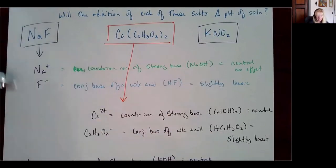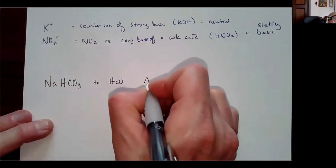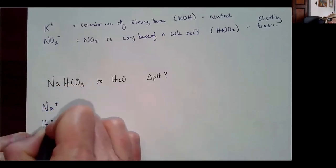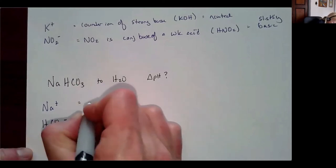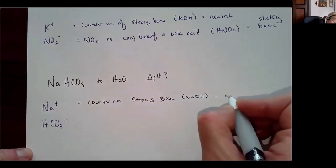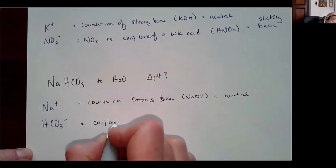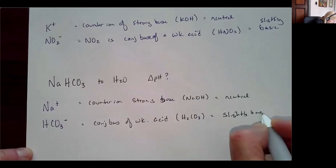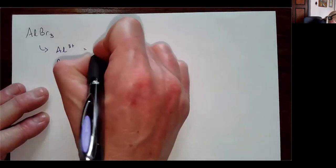For KNO₂: K⁺ is the counter ion of strong base KOH — neutral, no effect. NO₂⁻ is the conjugate base of weak acid HNO₂ — so it will be slightly basic. In all three of these cases — NaF, calcium acetate, and KNO₂ — adding them to water raises the pH above neutral. For sodium hydrogen carbonate: Na⁺ is the counter ion of strong base NaOH — neutral. HCO₃⁻ is the conjugate base of weak acid H₂CO₃, carbonic acid — slightly basic.